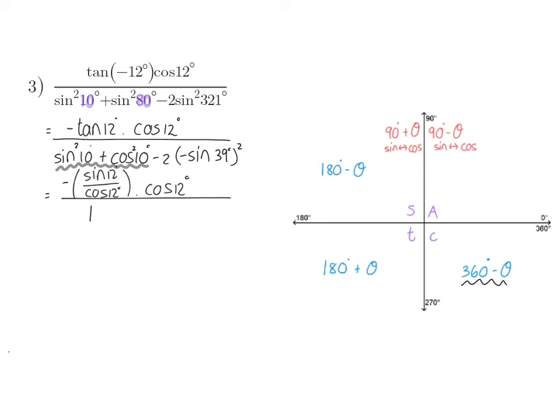And next up, I'm just going to simplify all those signs, so firstly in my bracket, I have minus sin 39 squared, which will become positive, and then I have to multiply that with negative 2, so it's negative 2 sin squared 39. Now I can simplify a bit further. In my numerator, the cos 12s will divide and become 1, and I'm left with minus sin 12.